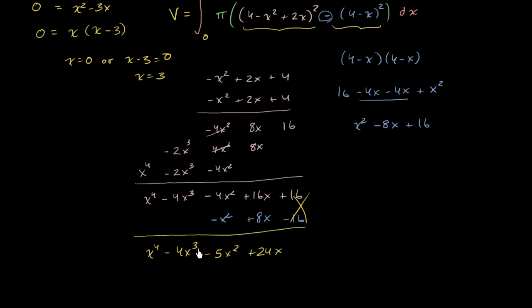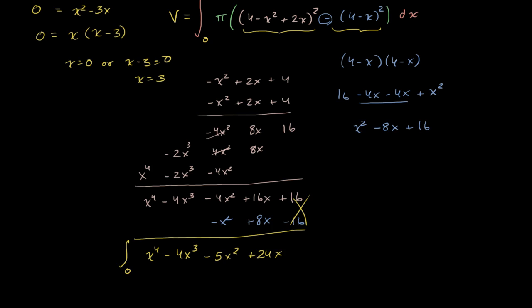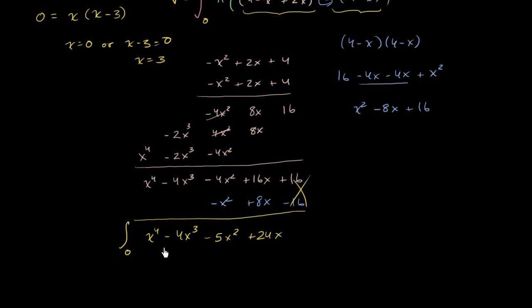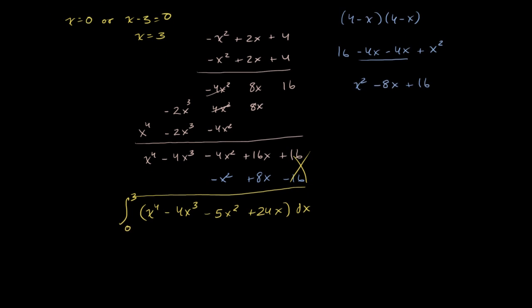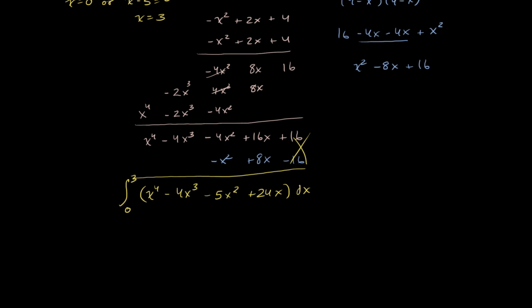So that's what we are left with as the inside of our integral. We're going to take the integral of this from 0 to 3 dx, and then we had a pi out front, so we take that out of the integral — times pi.